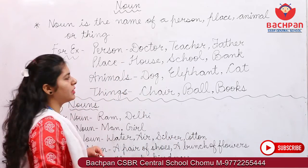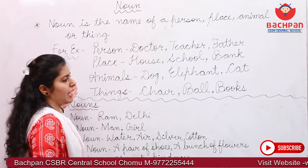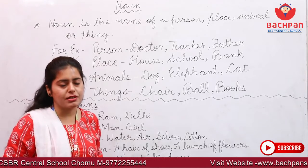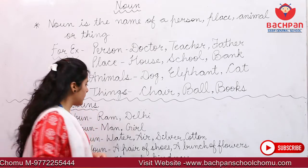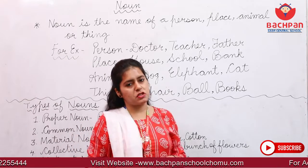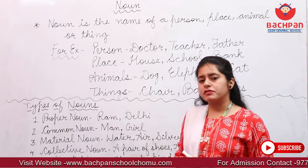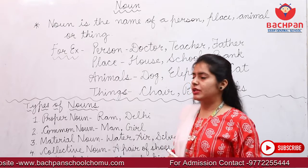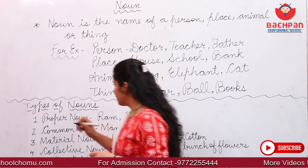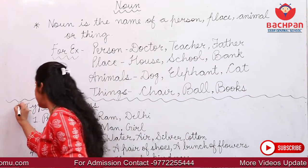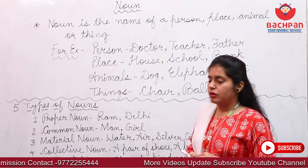So, as you have seen, Noun covers person, place, animals or things. Let's move on to types of nouns. There are five types of nouns. First is Proper Noun.